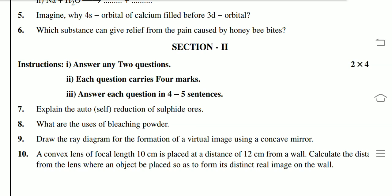Draw the ray diagram for the formation of a virtual image using a concave mirror. A convex lens of focal length 10 cm is placed at a distance of 12 cm from a wall. Calculate the distance from the lens where an object should be placed to form its distinct real image on the wall.